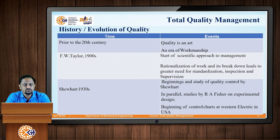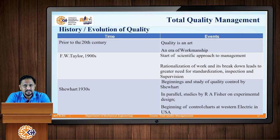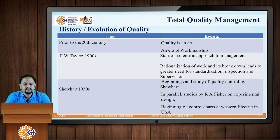Now let us discuss the evolution of quality — the history of quality. Prior to the 20th century, quality was considered as an art, or it was the era of workmanship. Later, in 1900, F.W. Taylor brought the concept of scientific management, where rationalization of work and its breakdown led to a greater need for standardization, inspection, and supervisory control. These three concepts — standardization, inspection, and supervision — were evolved.